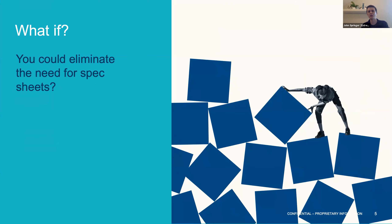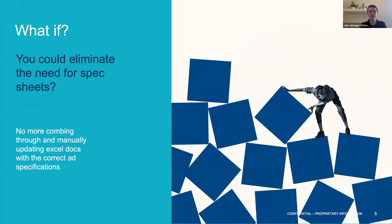And what if you could eliminate the need for spec sheets — completely erase spec sheets from your vocabulary altogether? No more combing through and manually updating Excel docs with the correct ad specifications, no more worrying about slate removals or individual video transcodes or any last minute spec requirement in general. Maybe it's to make a video accessible to the hearing impaired or closed captioned or with custom end cards or whatever. None of that stuff should be a hassle or particularly time consuming. One asset, one upload, hundreds of formats, any screen.